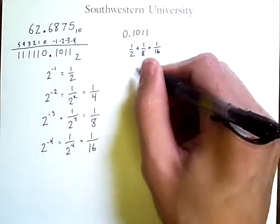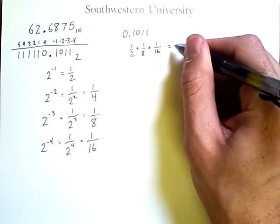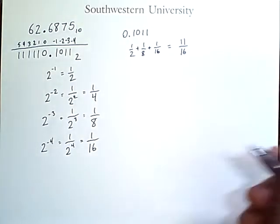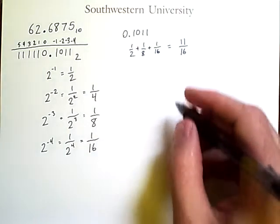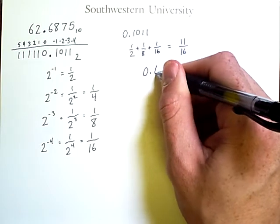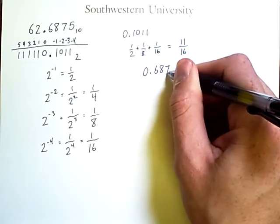Now, if we add these up, we will get 11 sixteenths. And if you use a calculator, you will find this does indeed come out to 0.6875.